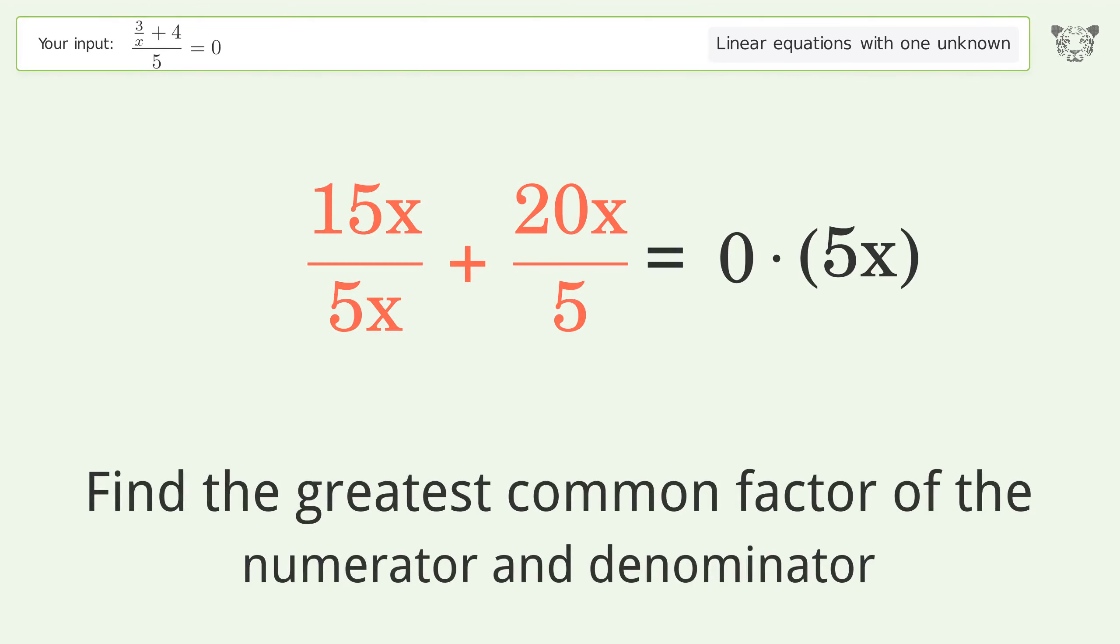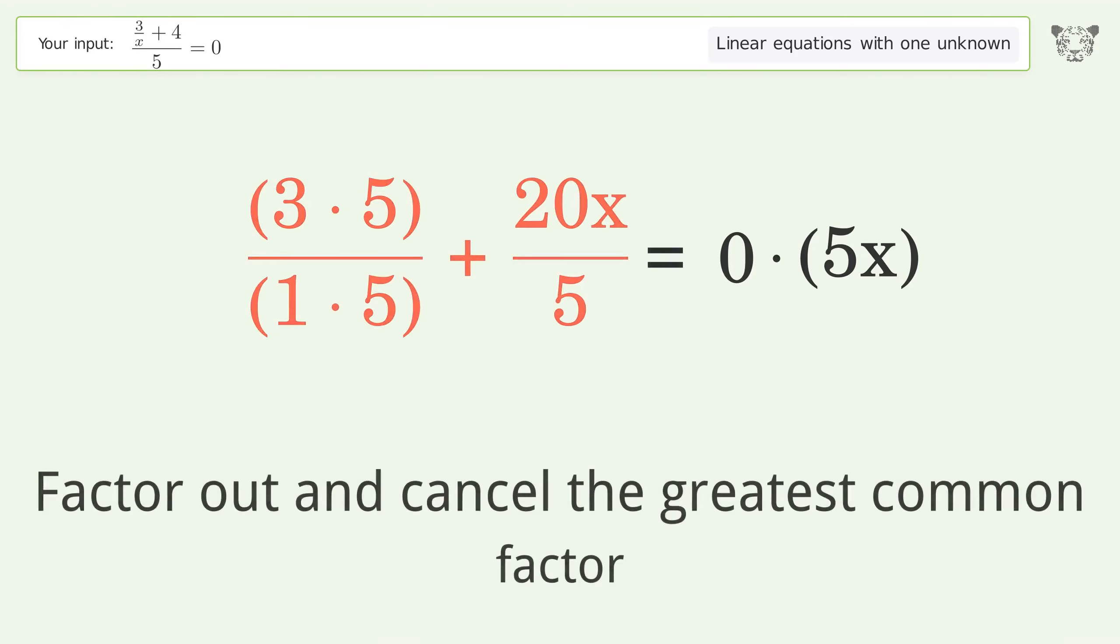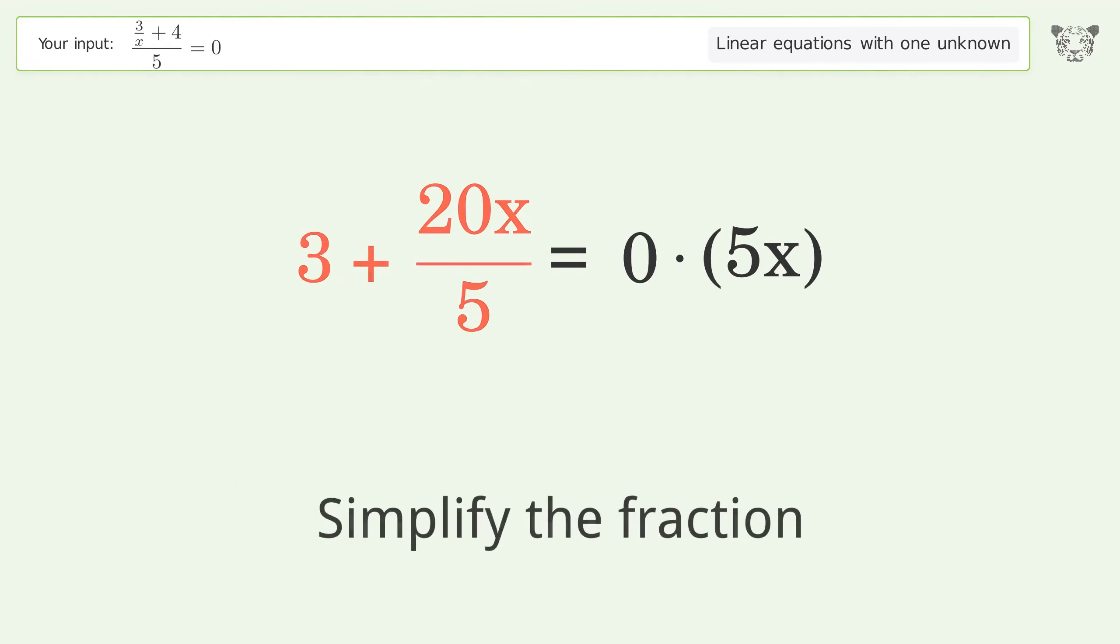Find the greatest common factor of the numerator and denominator. Factor out and cancel the greatest common factor. Simplify the fraction.